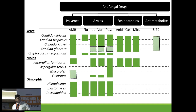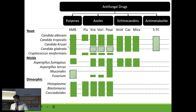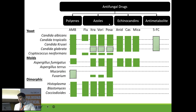This diagrammatic representation shows the spectrum these drugs cover. AmphoB covers a lot of areas — majorly all Candida species, Cryptococcus species, Aspergillus fumigatus, and dimorphic fungi — though it has less sensitivity against Mucorales and Fusarium. Among azoles, Posaconazole is the broadest spectrum drug, covering major Candida species, all Aspergillus species, Mucor, Fusarium, and the dimorphic fungi.